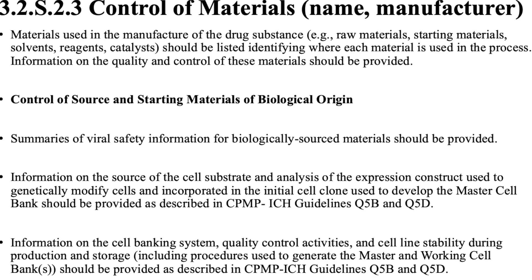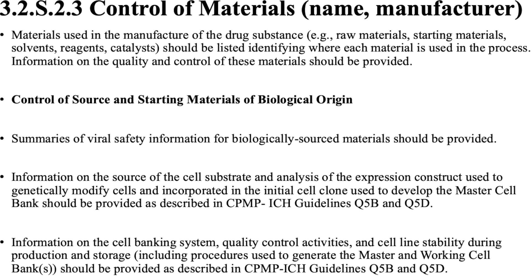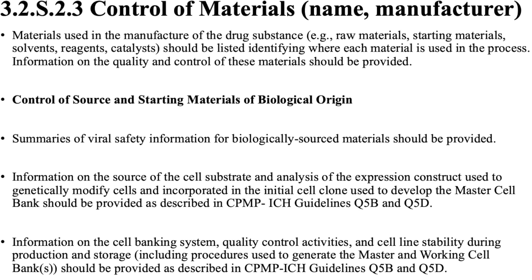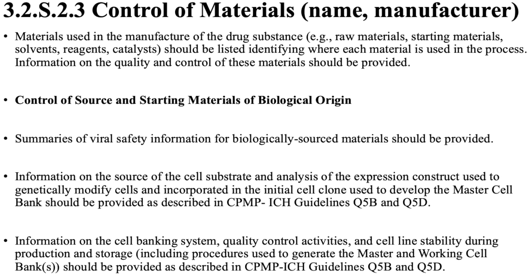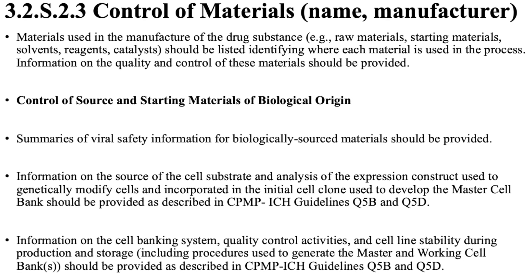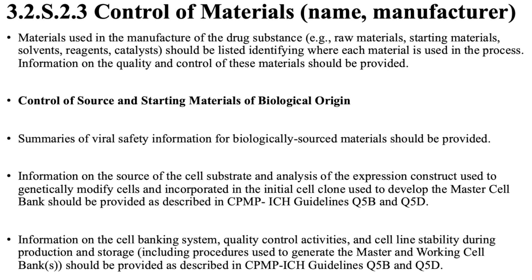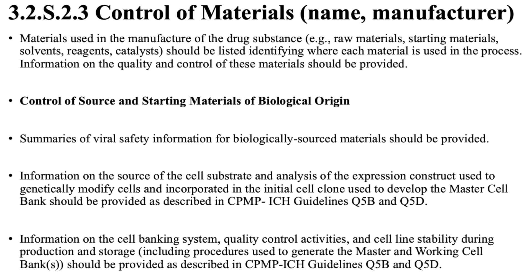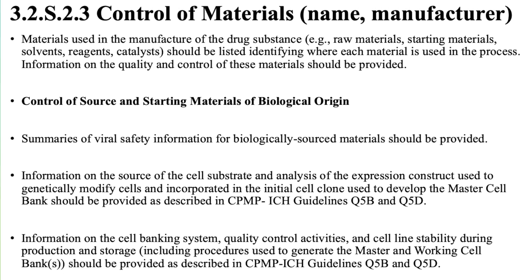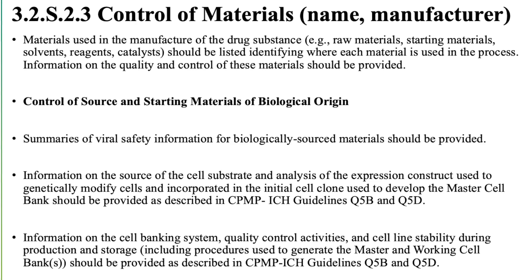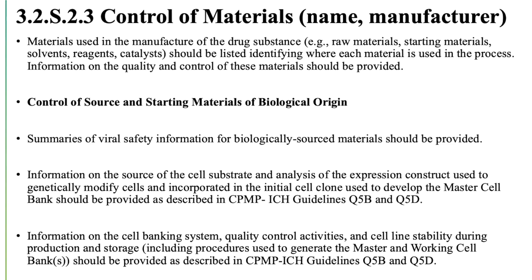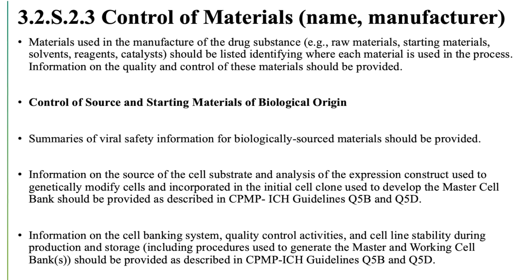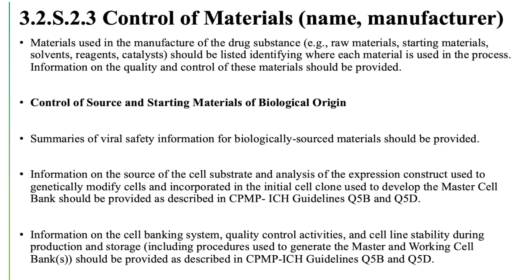3.2.S.2.3 Control of Materials (Name, Manufacturer): Materials used in the manufacture of the drug substance — for example, raw materials, starting materials, solvents, reagents, catalysts — should be listed, identifying where each material is used in the process. Information on the quality and control of these materials should be provided. Control of source and starting materials of biological origin: summaries of viral safety information for biologically sourced materials should be provided.